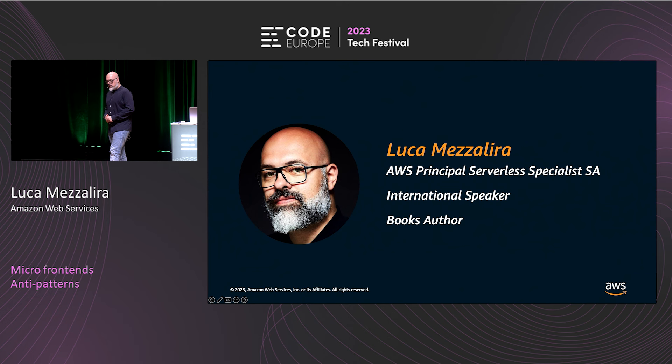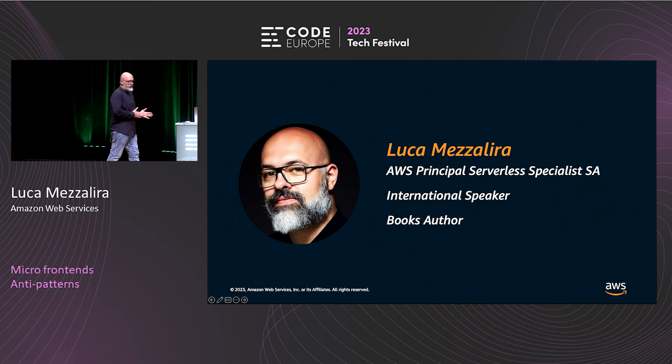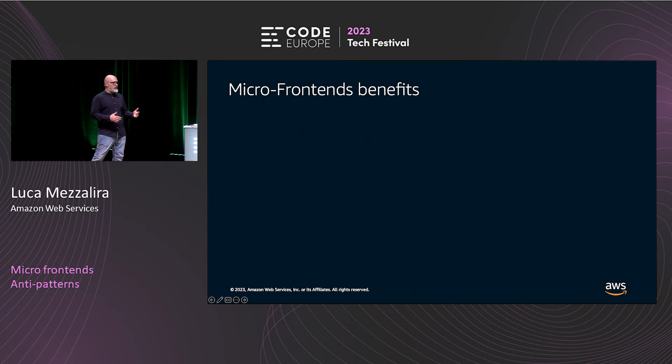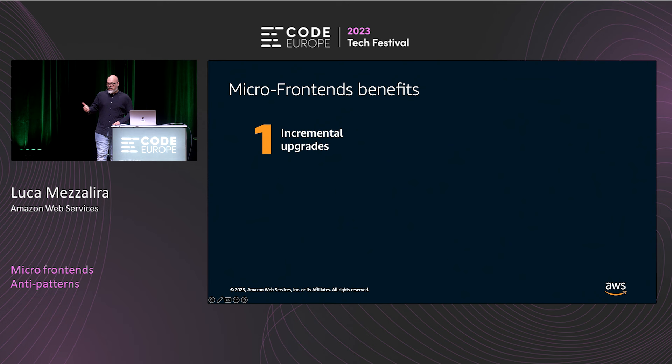Who am I? My name is Luca. I'm a serverless specialist based in London. I work for AWS and I'm an international speaker and book author. Let's start first with benefits — I don't want to just shoot micro-frontends, considering that I have seen pros and cons of this architecture.